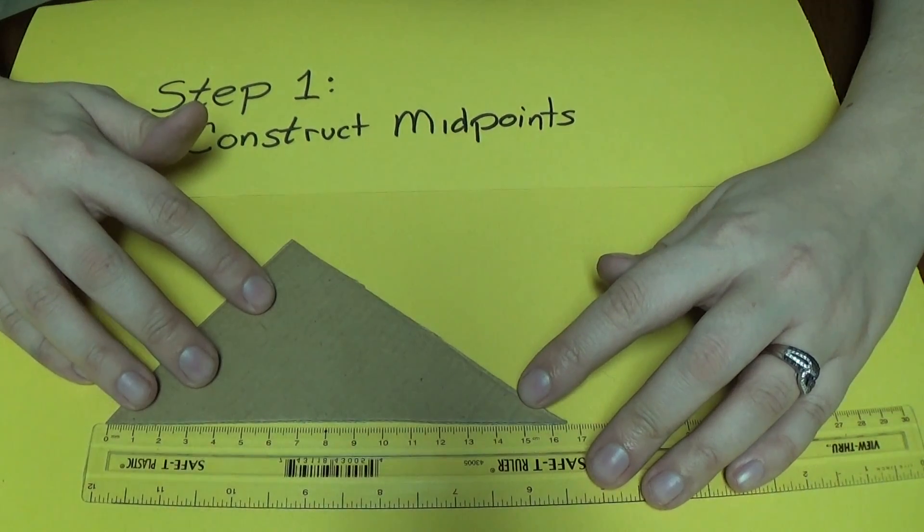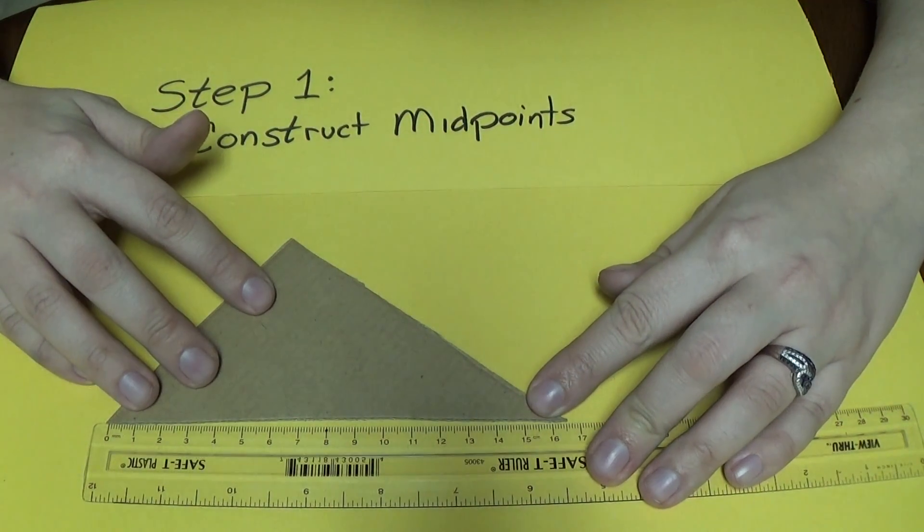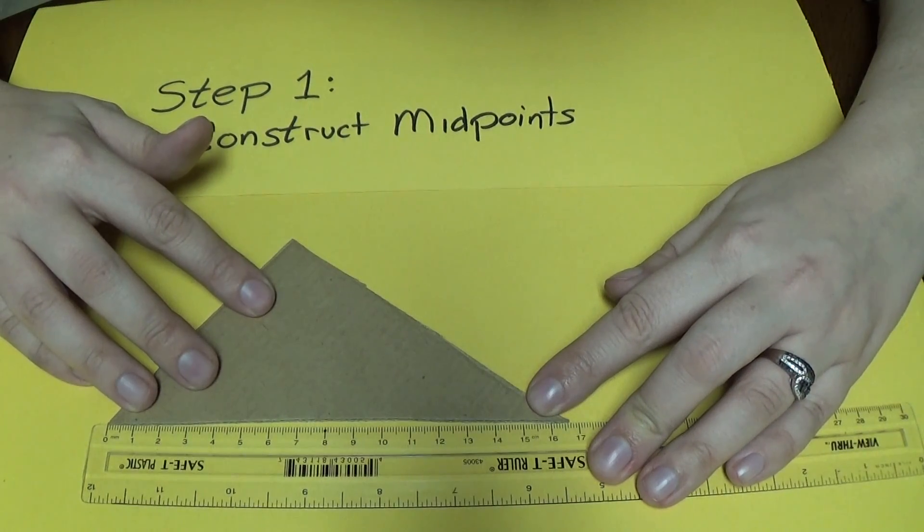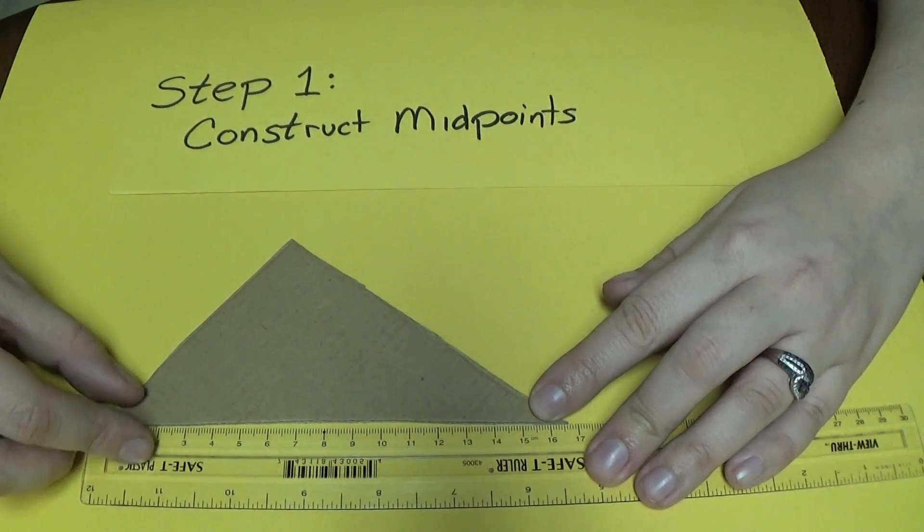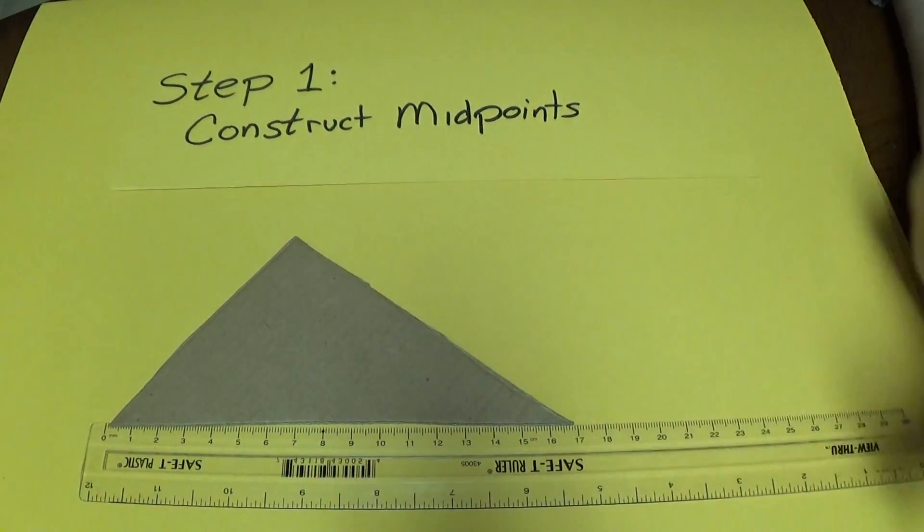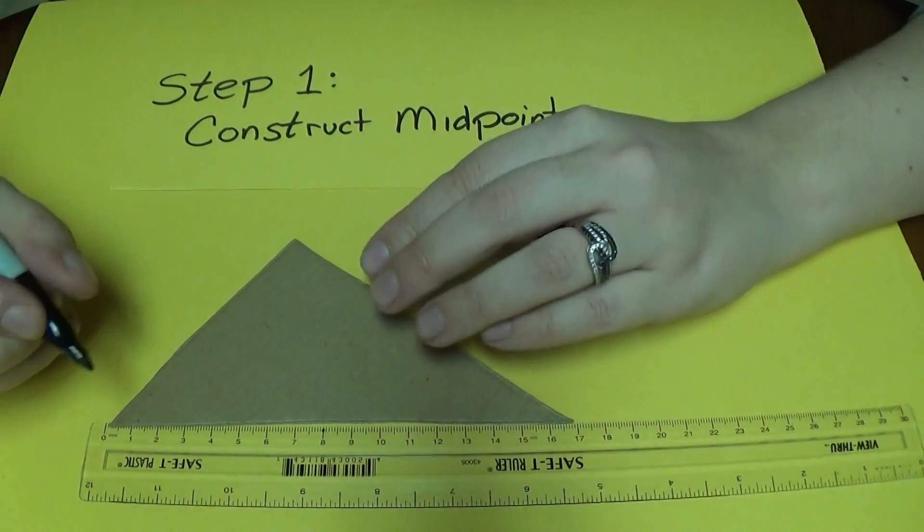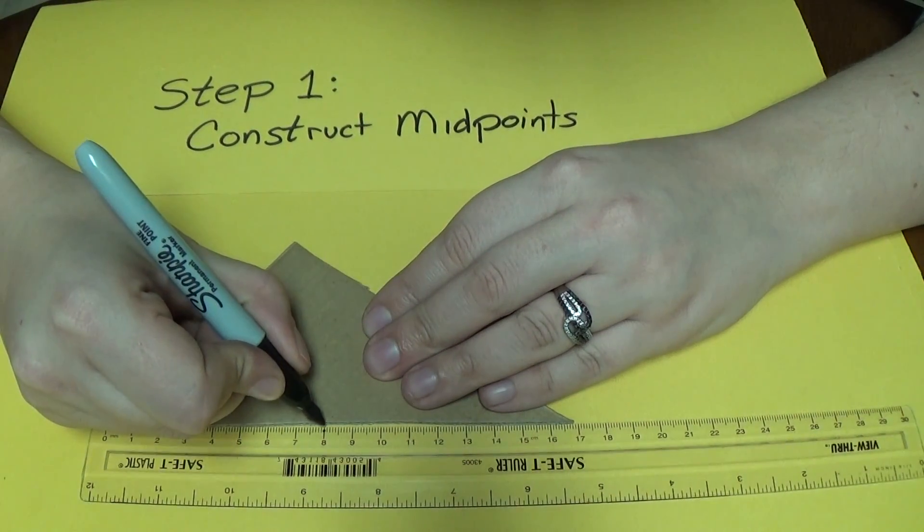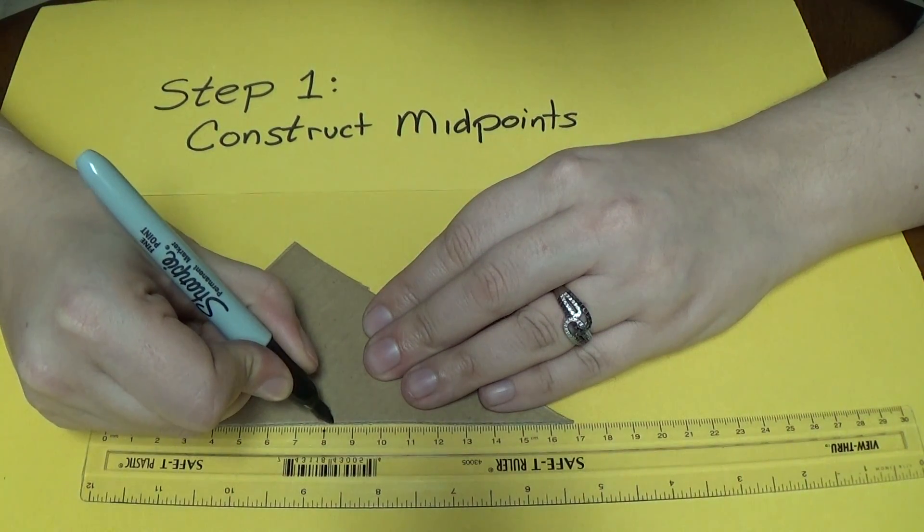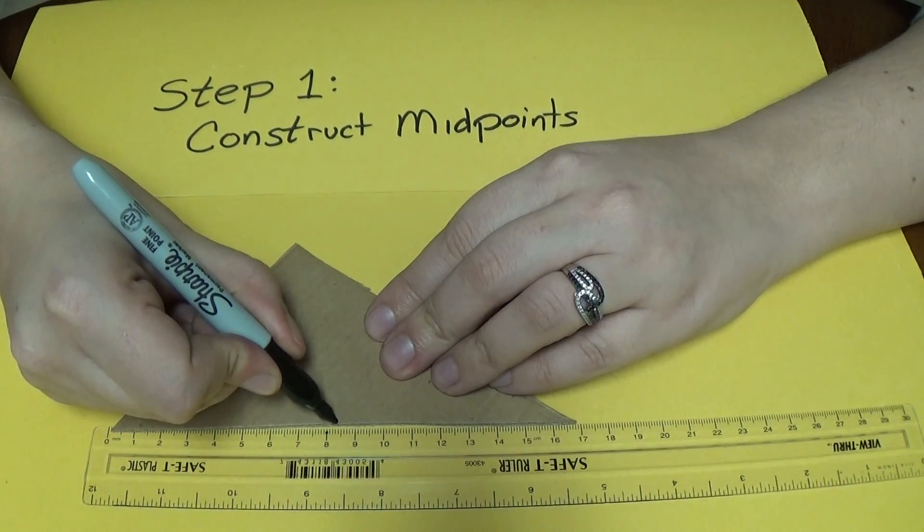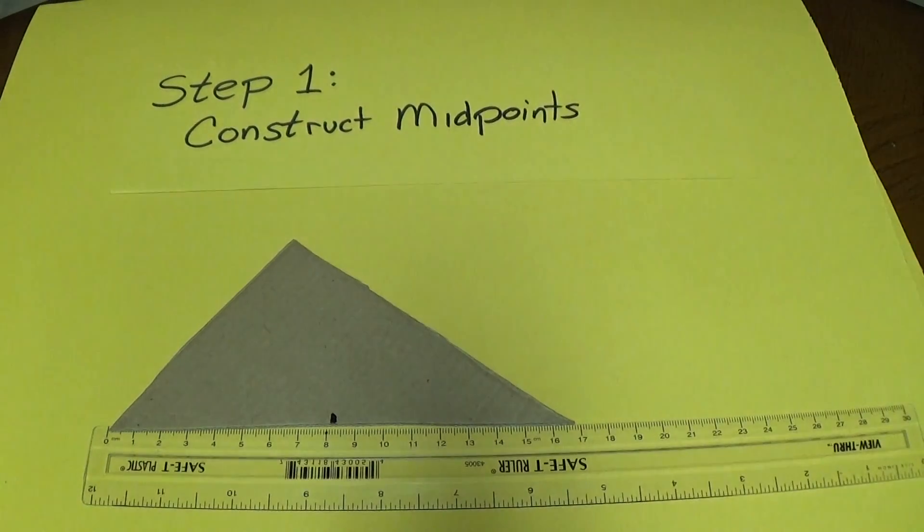So here we go. Our first side, well my first side, is sixteen point six centimeters long. So to find the midpoint of that, sixteen point six divided by two is eight point three. So I'm going to take my marker and go here to eight, one, two, three little ticks. And I'm going to put my midpoint right there. I'm going to make that big so you can see it.